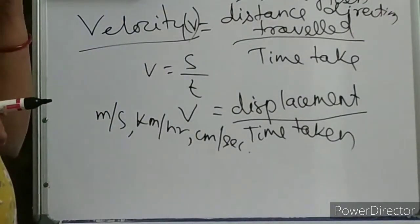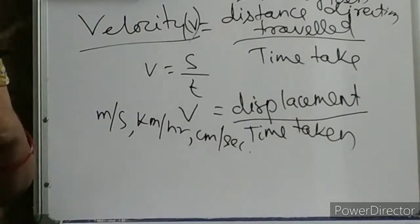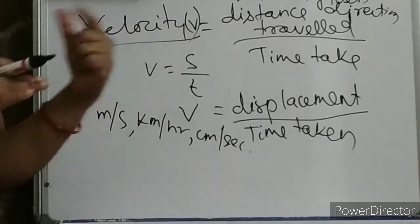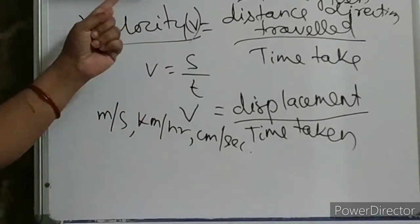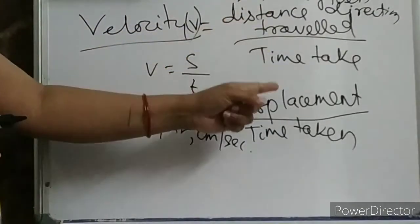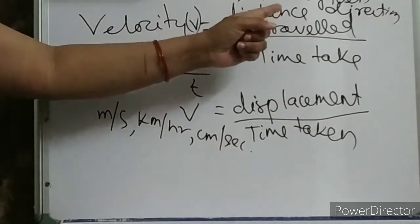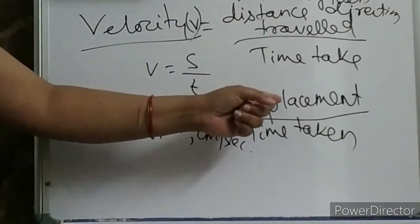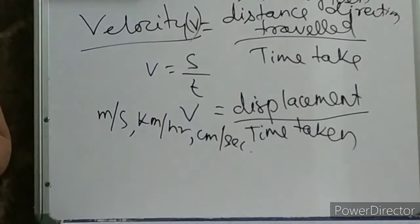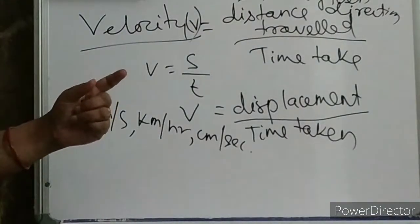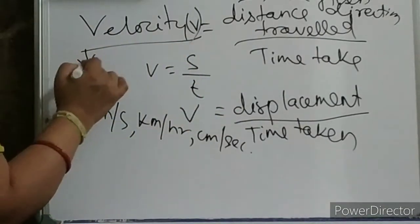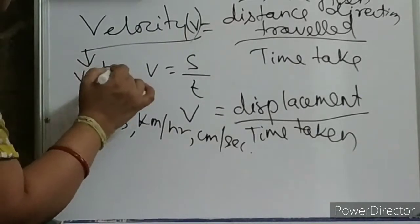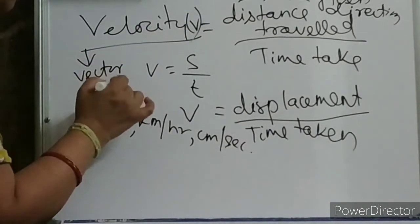Now tell me, is velocity a vector quantity or scalar quantity? We know speed is a scalar quantity. But in this case — and this is the major difference between speed and velocity — here we are having direction. That is why the term used is displacement. It is giving you not only the magnitude but also the direction. So that is why velocity is a vector quantity.